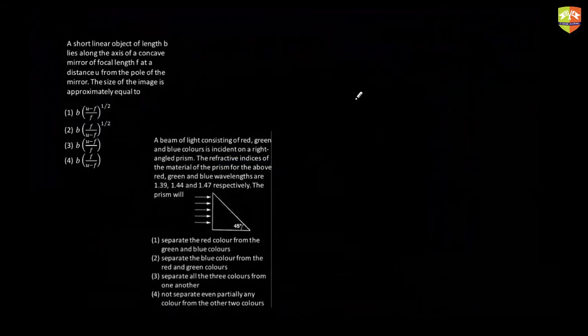Can a ray of light moving from denser to rarer medium get refracted? Yes — every time, part of light gets reflected and part gets refracted. That is always true. Only in total internal reflection does 100% reflection happen; otherwise, light is partly refracted and partly reflected.